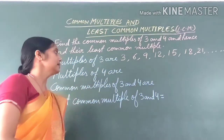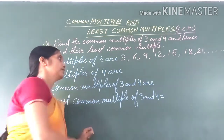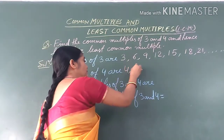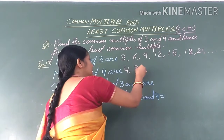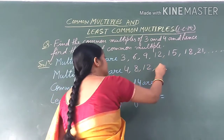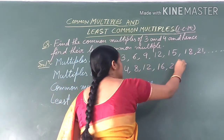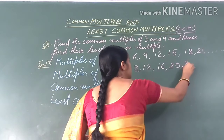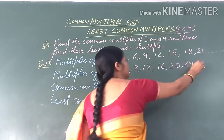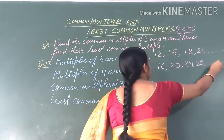Now we will find the multiples of 4. Multiples of 4 are: 4, 8, 12, 16, 20, 24, 28, and so on.